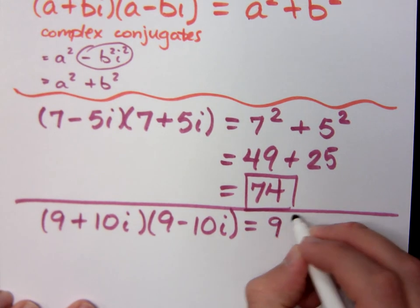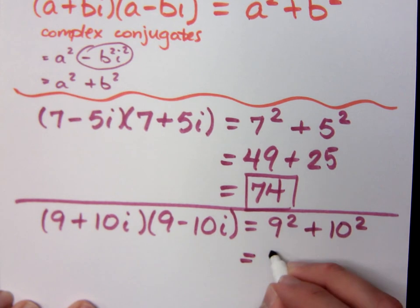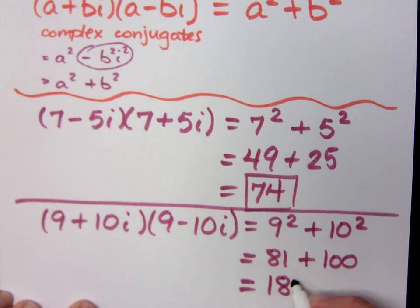9 squared plus 10 squared. 9 squared plus 10 squared. And then you just work this out. We have 181.